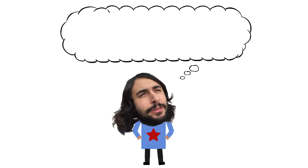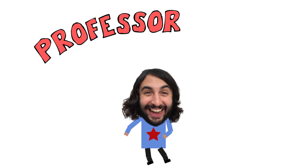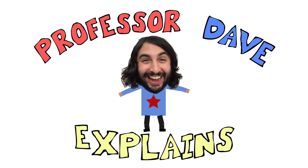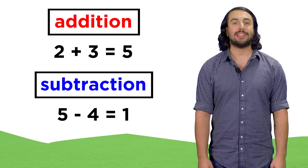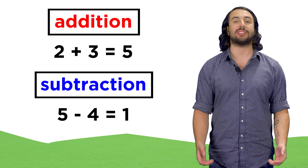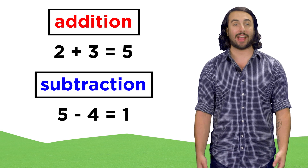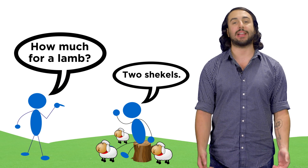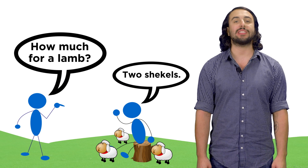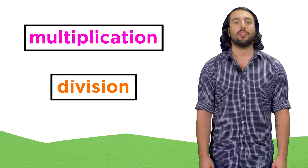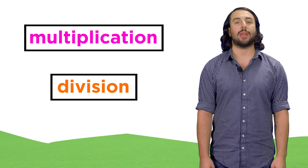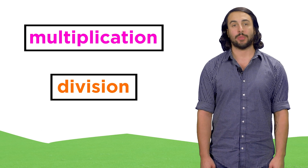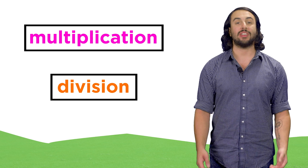Professor Dave here, let's talk about multiplication and division. It's easy to understand how humans developed addition and subtraction out of necessity due to the increasingly complex interactions that burgeoning civilizations required. The next operations that followed soon after were multiplication and division.